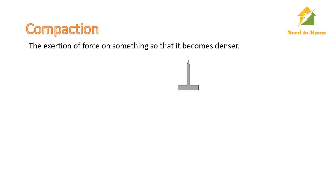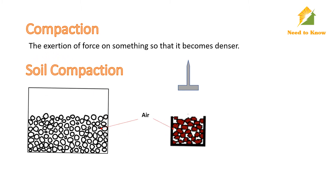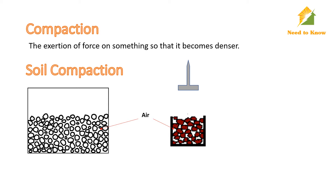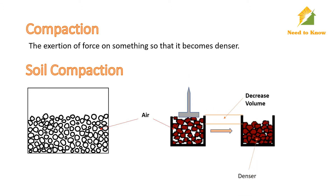Compaction is the exertion of force on something so that it becomes denser. Soil compaction is the method of mechanically increasing the density of soil. It may be defined as removing the air in between soil particles by applying load to decrease the volume or increase the density of soil.